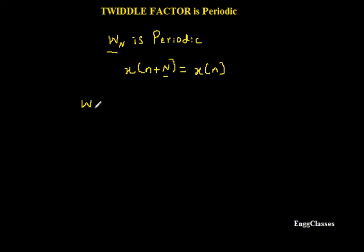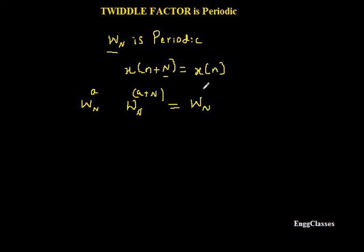We will use the same concept for the twiddle factor. Consider Wn to the power a, where a is any integer. The condition for it to be periodic is: Wn to the power (a + N) must equal Wn to the power a. If this condition is satisfied, the twiddle factor is periodic.